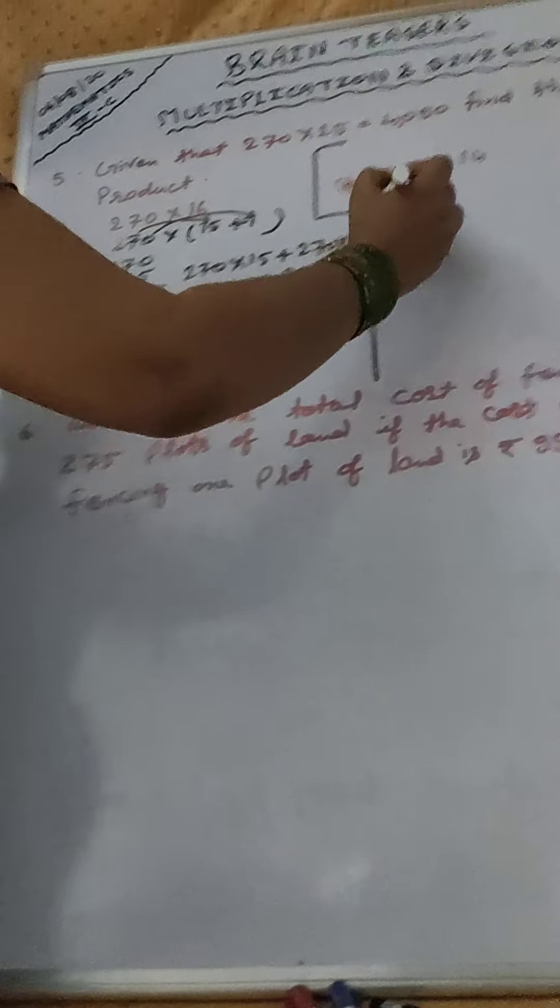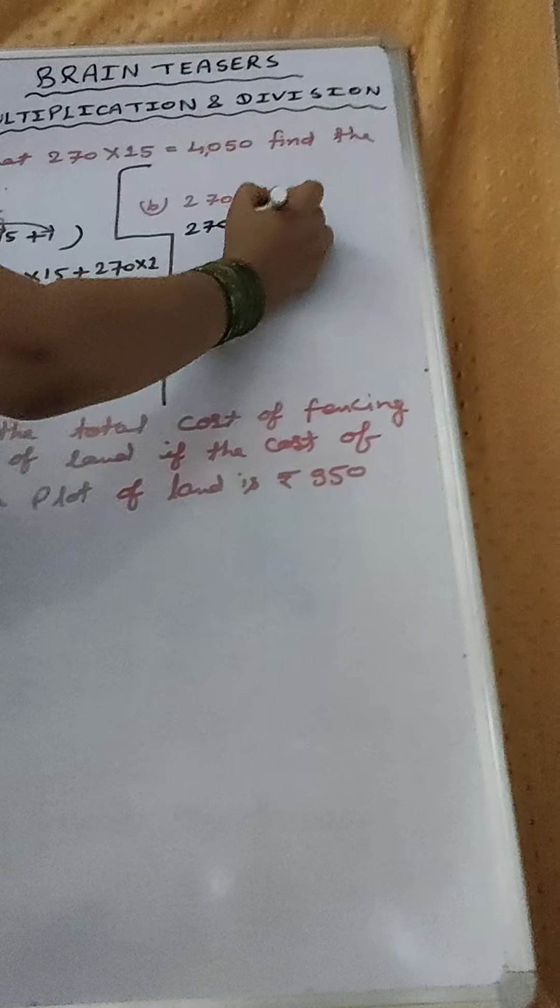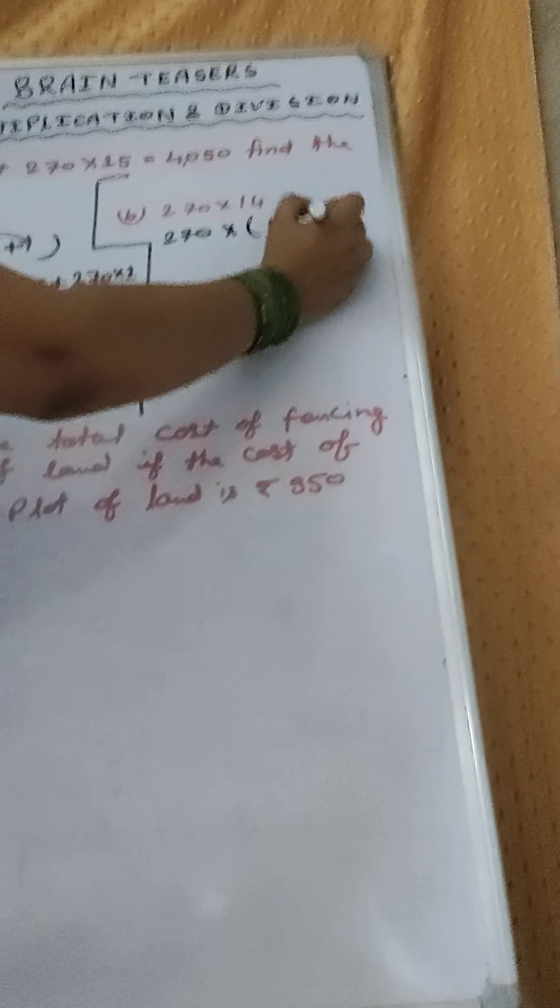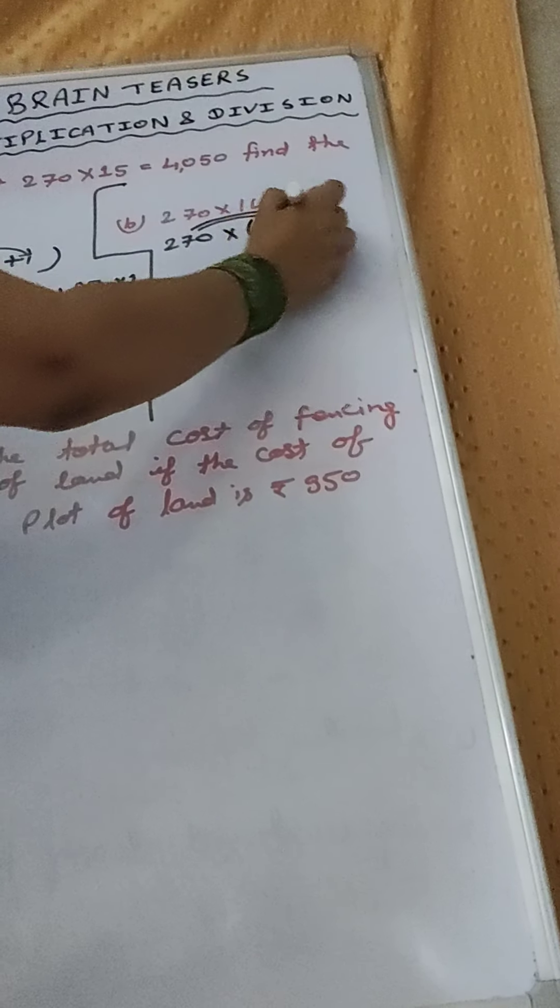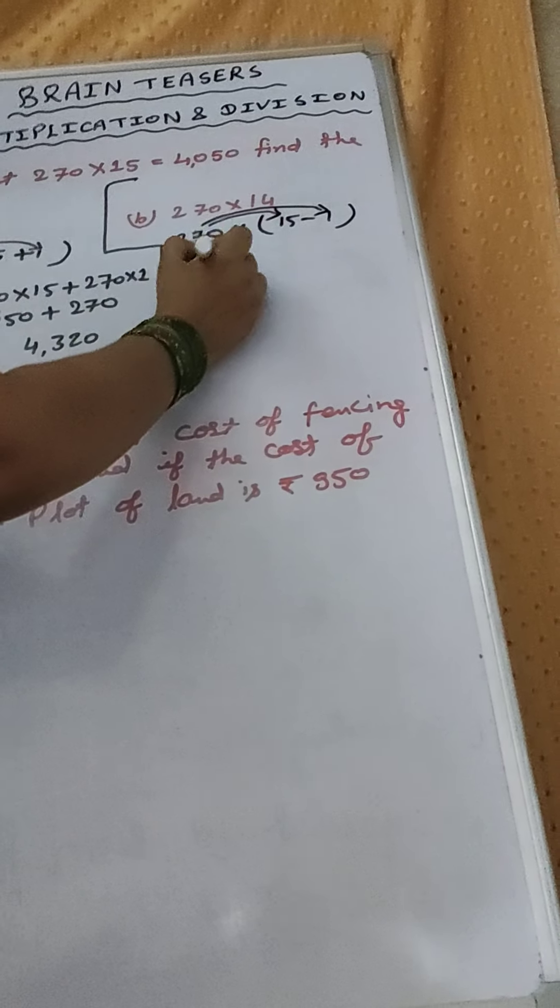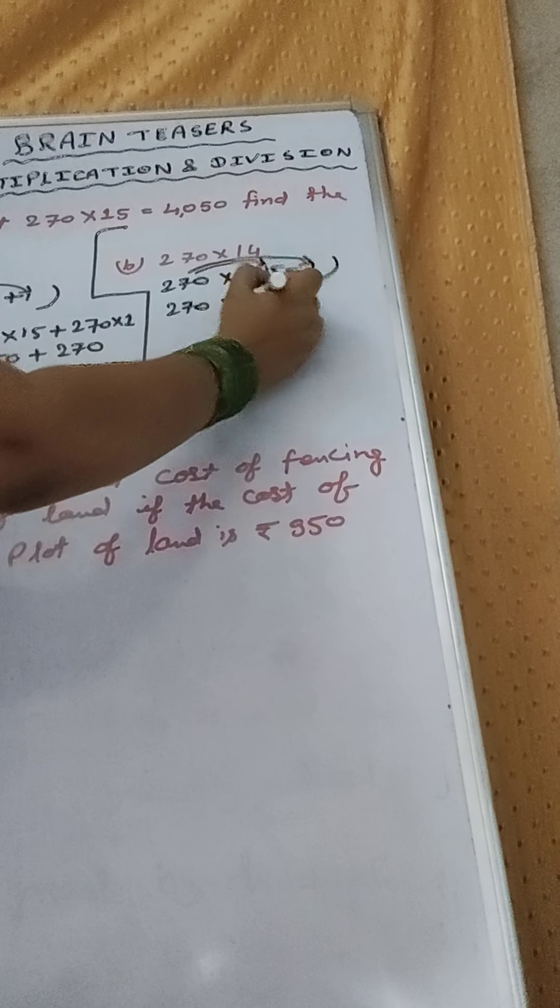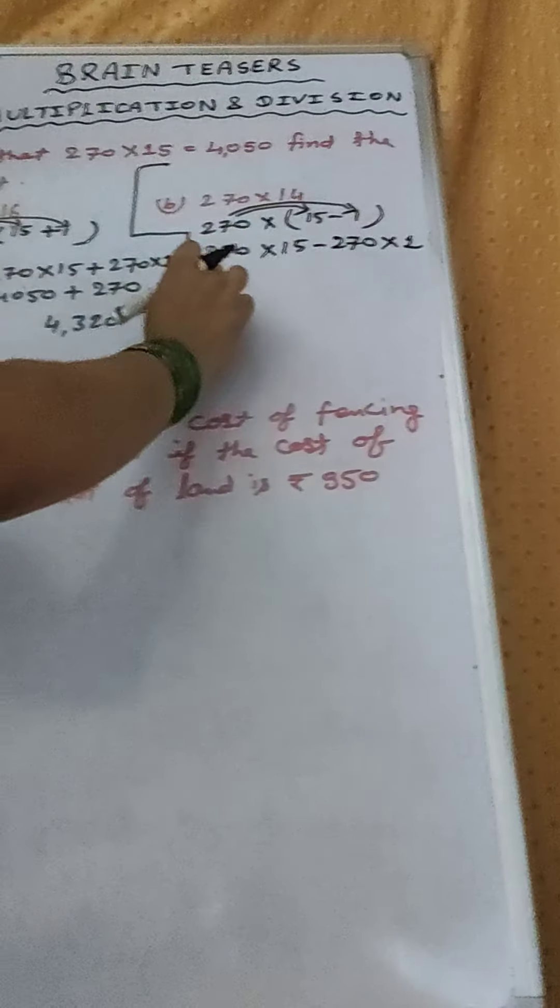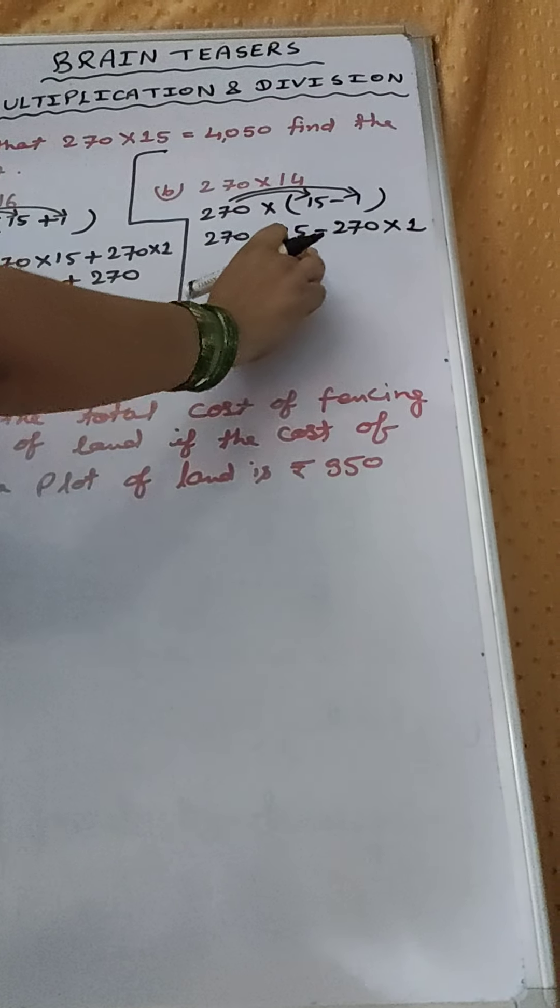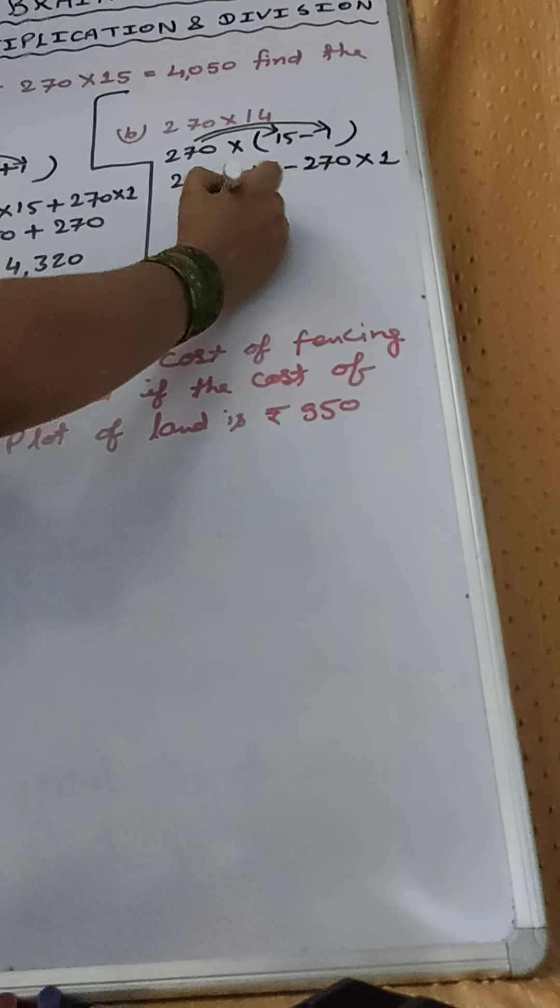Now, here we will subtract. 270 into 15 minus 1. Again, we will multiply like this. 270 into 15 minus 270 into 1. 270 into 15, that will be 4050.